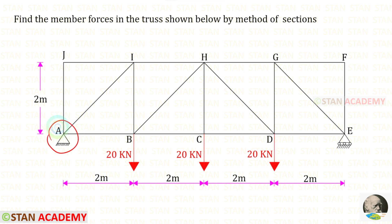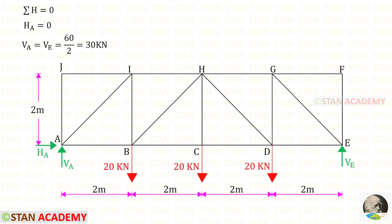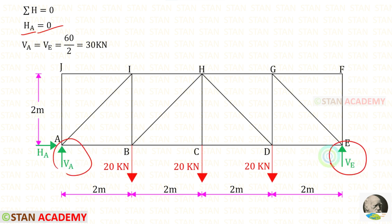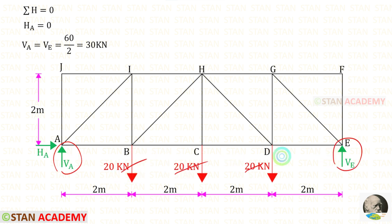At point A we have a hinged support and at point E we have a roller support. We know that at the hinged support there will be two reactions and at the roller support there will be only one reaction. Since there is no horizontal load, HA will be equal to zero. Since the truss is symmetrical, the values of VA and VE will be the same. Adding the three loads gives 60, divided by 2, so VA and VE are each 30 kilo-Newton.